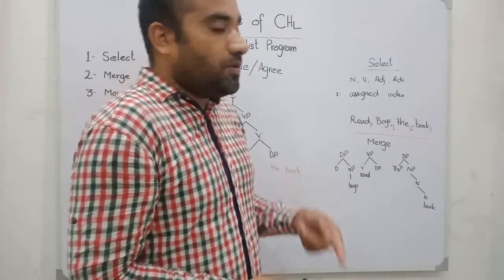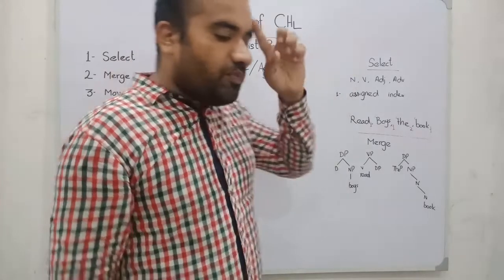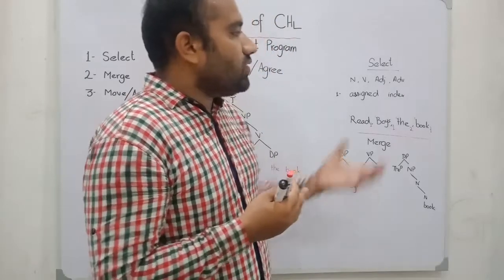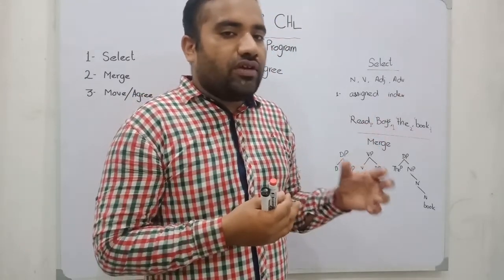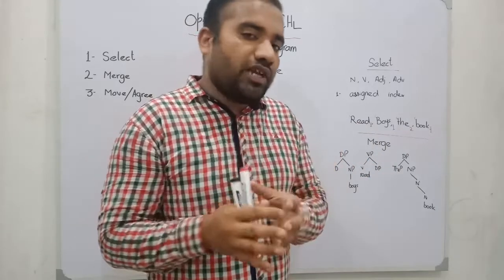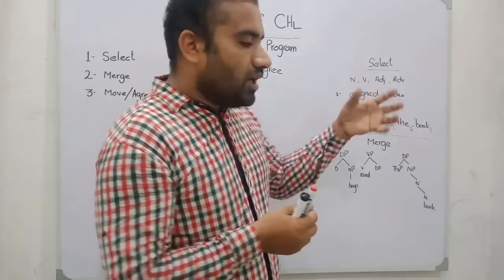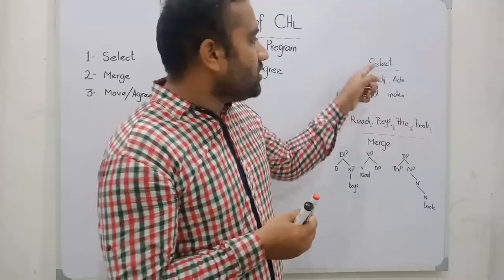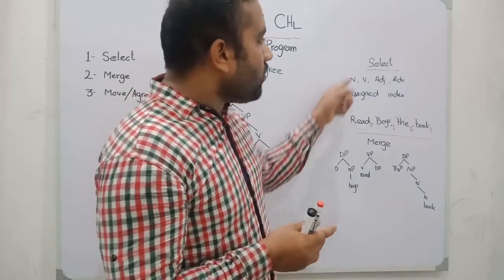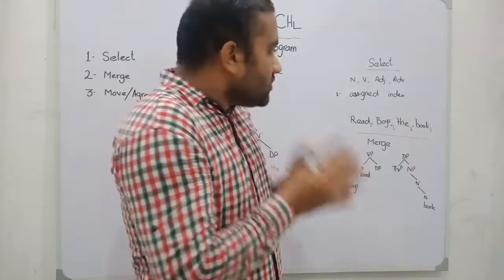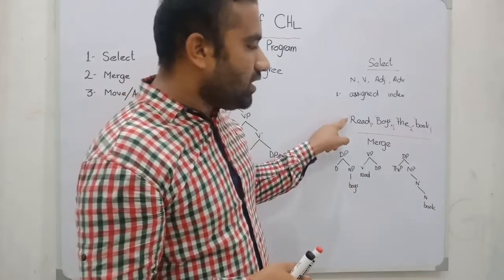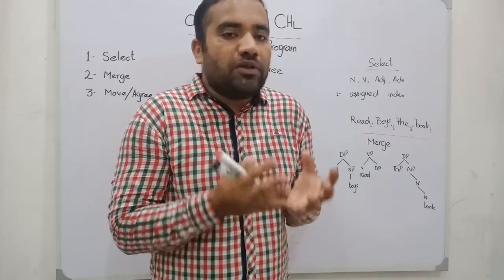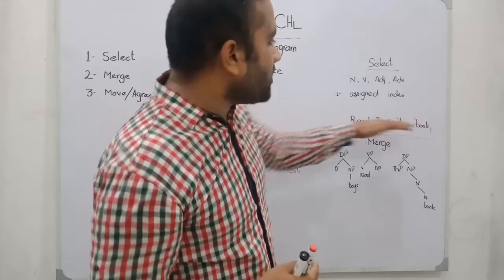Let's recall the previous operations. Operation select: when a speaker wants to construct a sentence, the system takes words from the lexicon and constructs a lexical array, or a subpart of the lexicon. After operation select, the system assigns an index. The index value indicates how many times a specific category will be repeated within the derivation. This is operation select.